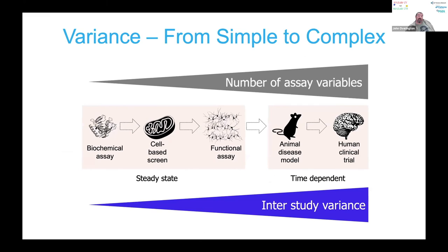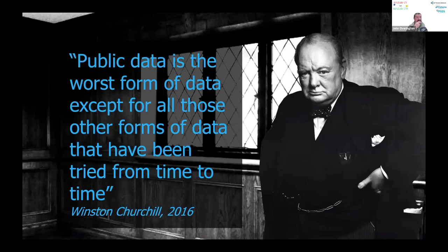What's the learning from this? The simpler an experimental system is, the fewer the number of assay variables, the smaller the interstudy variance, and consequently the more accurate your model is likely to be for that particular endpoint. One of the Occam's razor sort of principles though is: there's little point being very good at predicting things here if the real acid test is being able to understand or predict how a compound acts in humans. And as a final slide, to misquote Winston Churchill, to show the unreliability of data on the internet: 'Public data is the worst form of data, except for all other forms of data that have been tried from time to time.' Thank you very much.